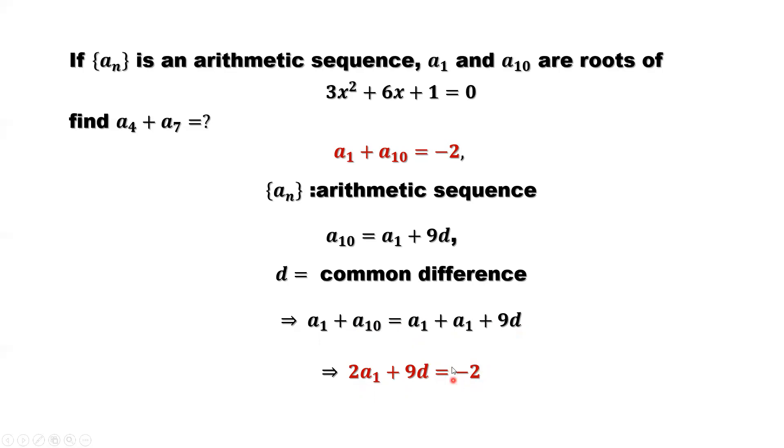Where comes the negative 2? Because A1 plus A10, A1 plus A10 equals negative 2. So 2A1 plus 9D equals negative 2.